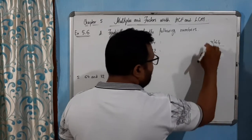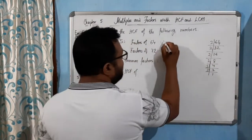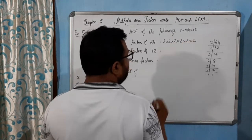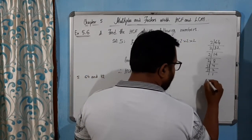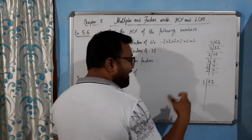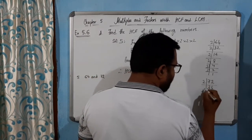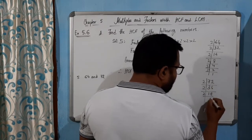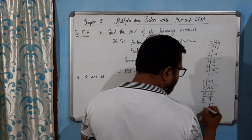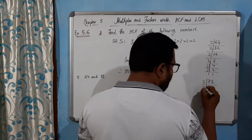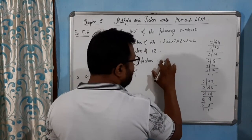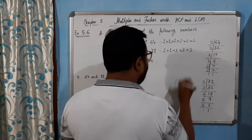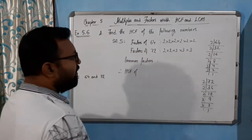Now the last example: 64 and 72. For 64: dividing by 2 six times gives 64 = 2 × 2 × 2 × 2 × 2 × 2. For 72: 72 ÷ 2 = 36, 36 ÷ 2 = 18, 18 ÷ 2 = 9, and 9 = 3 × 3. So 72 = 2 × 2 × 2 × 3 × 3.